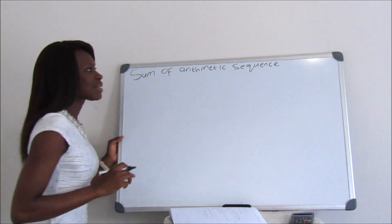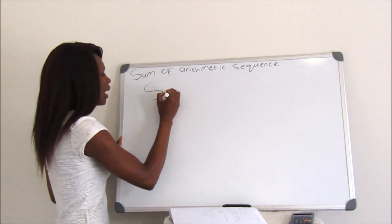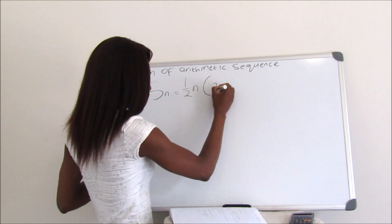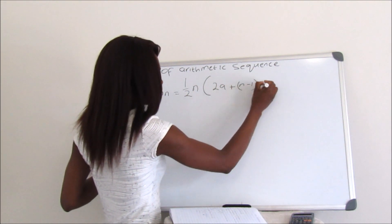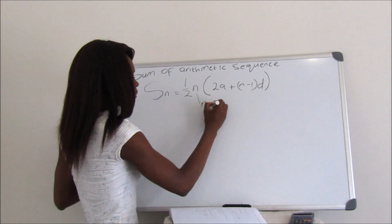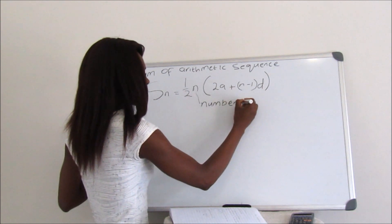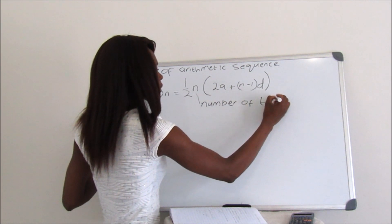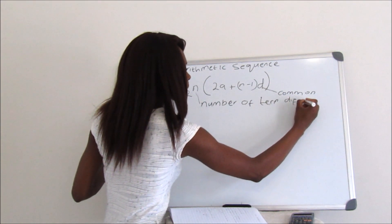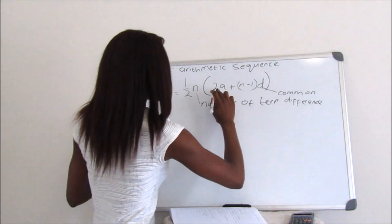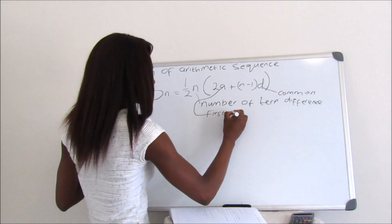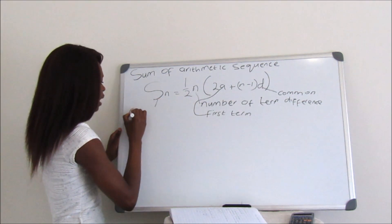Our standard formula to get the Sum of Arithmetic Sequence is: Sn = (1/2)n × (2a + (n−1) × d). From this equation, n is the number of terms, d is our common difference, a is our first term, and Sn is the sum of the nth term.